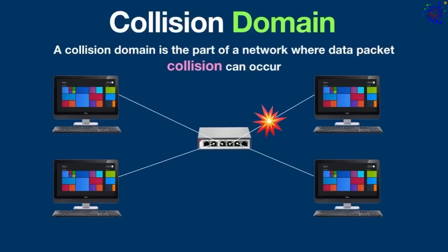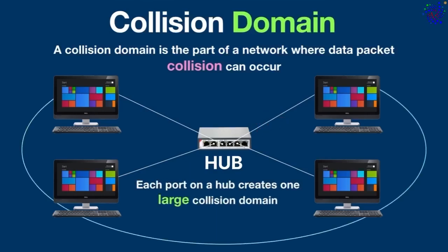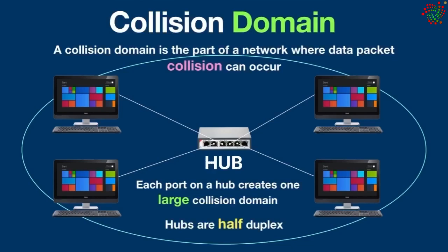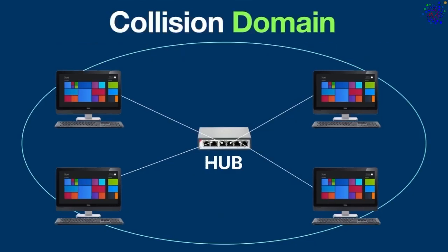When packets collide, both devices must wait and resend the data packet. Collisions happen in a network where hubs are used. This is because each port on a hub creates one large collision domain, so all devices connected to the hub are in the same collision domain. Also, hubs are half-duplex, which means they can send data only in one direction at a time. When a device connected to this hub sends a data packet, the hub will forward the data to all its ports.